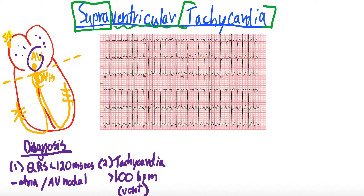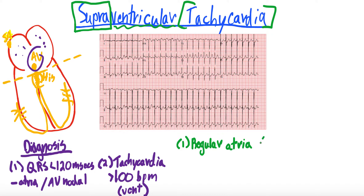The difficult part is then differentiating the different types of supraventricular tachycardias. When differentiating the different types, you can essentially classify them based on site of origin or irregularity or both. The different types of supraventricular tachycardia: the first is regular rate arising from the atria, the second is irregular rate arising from the atria, and the third is regular rate arising from the AV node.